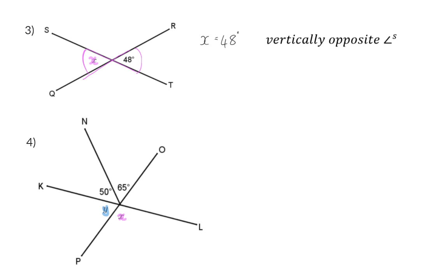If we start off with X, you will see that X is formed by two straight lines crossing, which means we have vertically opposite angles. This means that X will be the same size as the angle vertically opposite, which consists of two small angles.